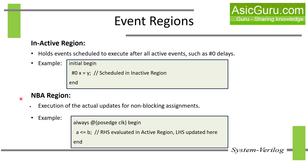Next is the NBA region. The NBA region holds events which are evaluated after all inactive region events are processed, and it executes the actual value update for all non-blocking assignments. It ensures deterministic behavior since the RHS value is already evaluated in the active region. So the value of B is captured in the active region and the value of A is updated in the NBA region.